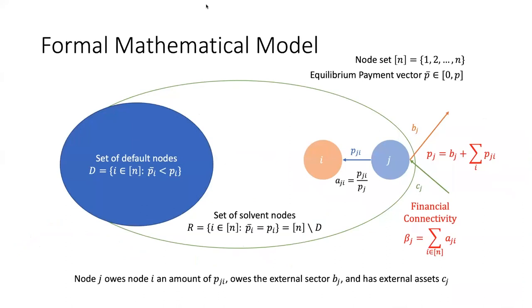Our model starts with a collection of N nodes, where the liability from node J to node I is denoted by P_JI. Node J has external assets e_J and external liabilities B_J that are positive. The total liabilities of node J are denoted by P_J, and the relative liability from J to I is the fraction P_JI over P_J, which we denote alpha_J. Each node has an equilibrium payment P_J bar. Based on the equilibrium payments, nodes are partitioned into two categories: solvent, where a node can serve all of its debts and the clearing payment equals the total liabilities; and default, where a node cannot meet all its liabilities and distributes them proportionally among its creditors. The total relative exposure of a node in the internal network defines the node's financial connectivity, denoted beta_J, which is the sum of alpha_JI for all I.